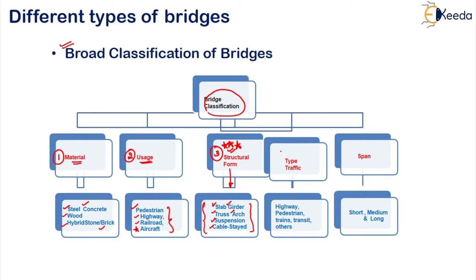The fourth classification is based on the type of traffic which is being used on that particular bridge. So your highway, pedestrian, train, transit, and others — these are the different categories under the type of traffic using your bridge.